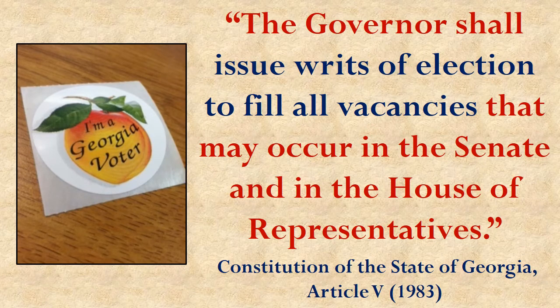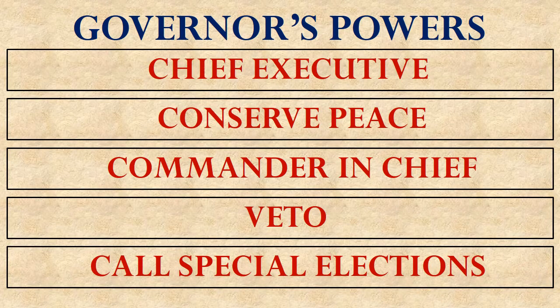The next power concerns the governor issuing writs of election to fill vacancies in the Senate or the House. If a vacancy occurs — somebody retires, dies, resigns, or whatever — and they leave an opening in the House of Representatives or the Senate between elections, the governor has a responsibility to call a special election to fill that seat. That's the fifth of the governor's ten powers: he can call special elections.